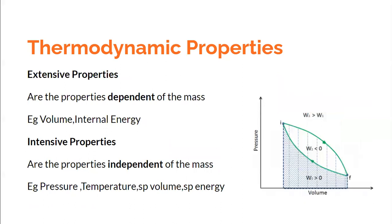Thermodynamic properties are distinguished into two types: extensive properties and intensive properties. The distinction has to do with dependence on mass. Any property that depends on mass — meaning if the mass is more, the property value is more — is called an extensive property. For example, volume is an extensive property: a gas with a small mass occupies less volume at a given pressure, while a gas with more mass occupies more volume.